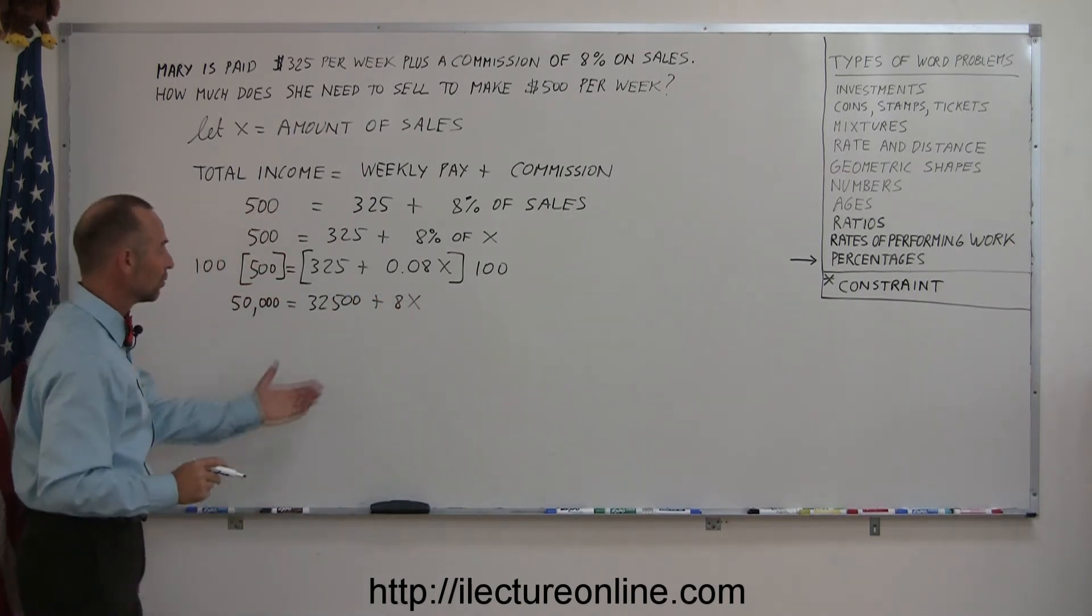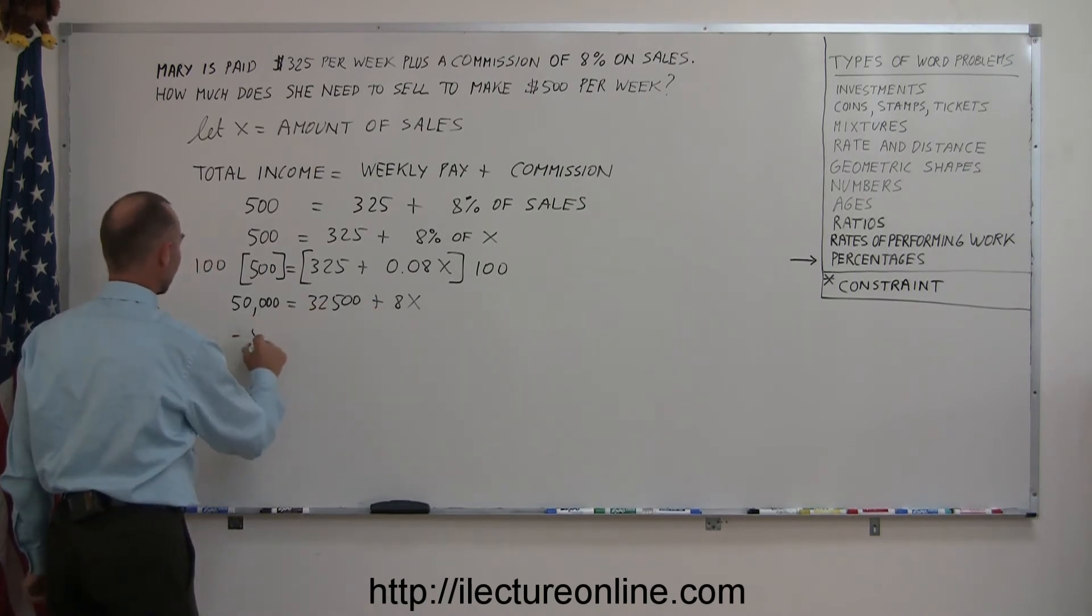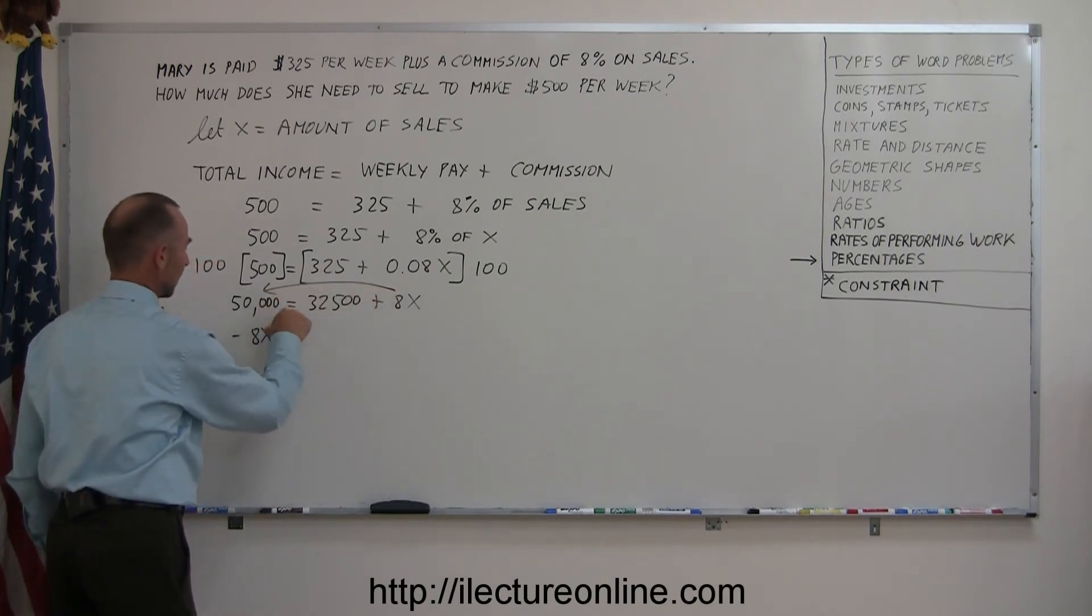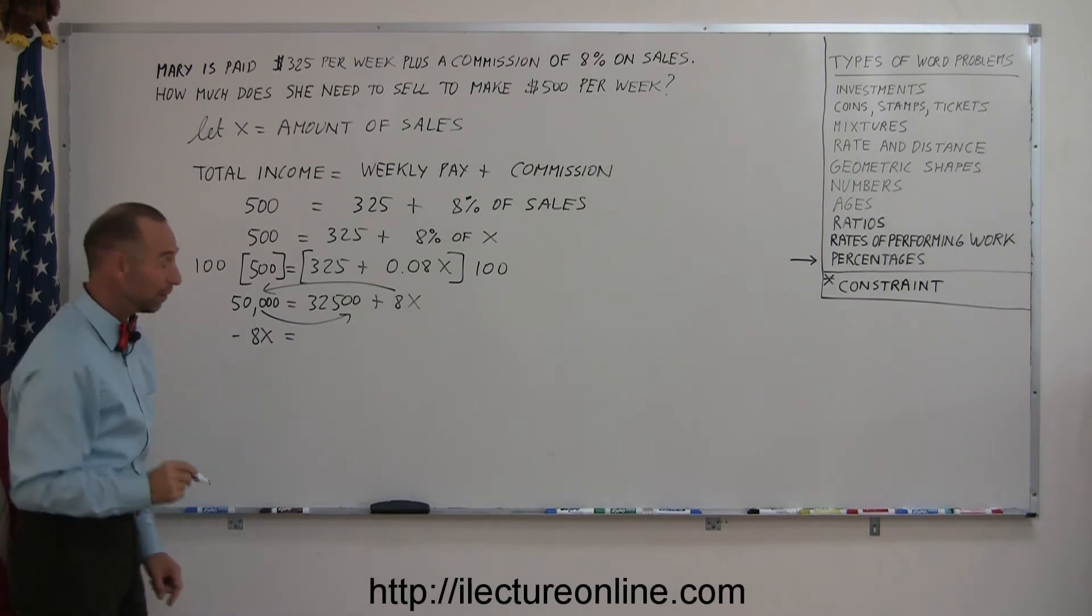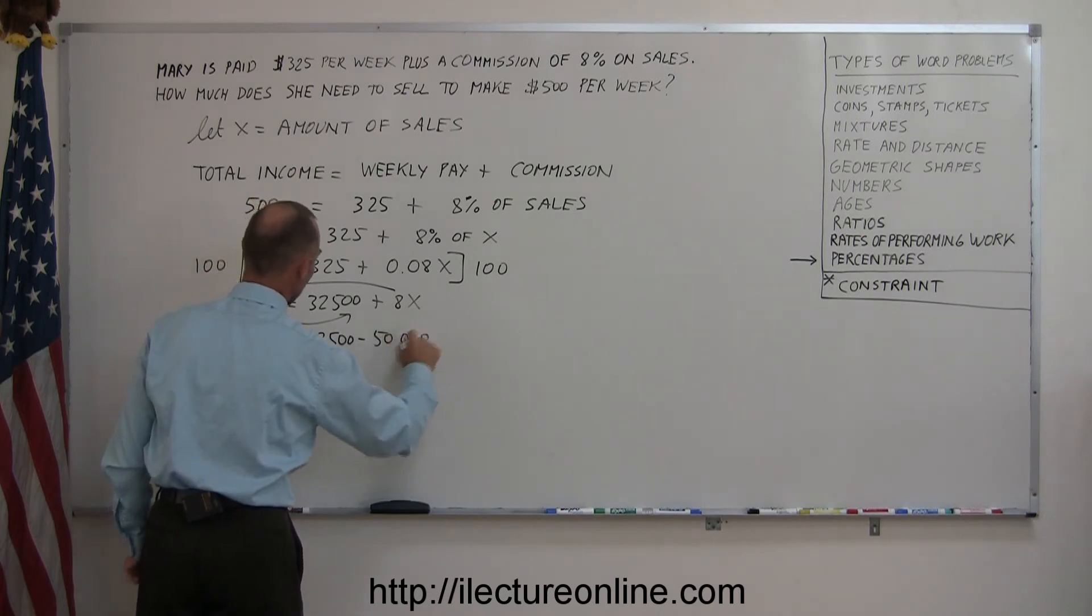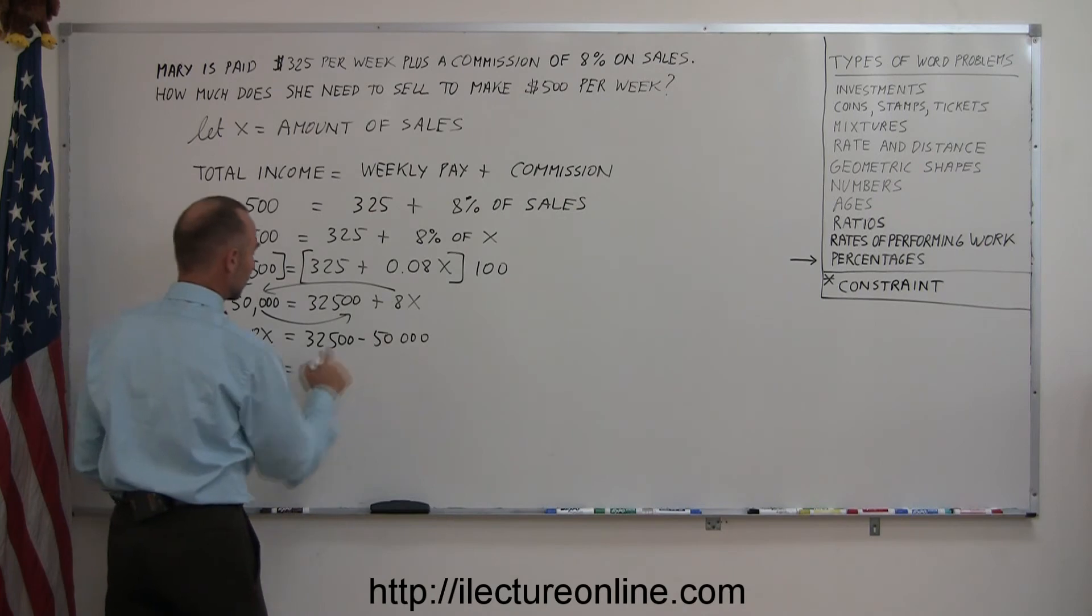Now the next thing I want to do is move all the x's to the left side, all the numbers to the other side, so it becomes minus 8x. Remember, whenever we cross the equal sign, we change the sign and the 50,000 goes across here. That changes sign as well. So minus 8x is 32,500 minus 50,000. So we end up with minus 8x equals the difference between those two is minus 17,500.